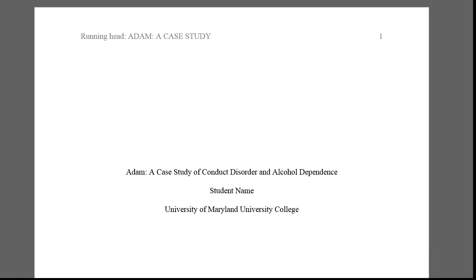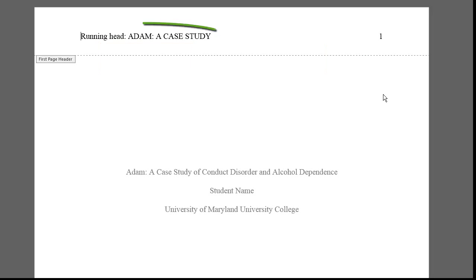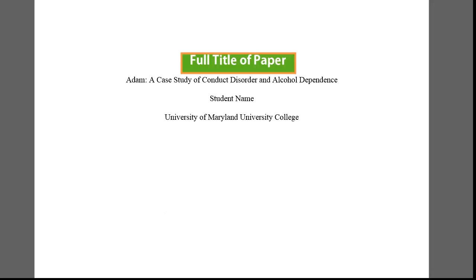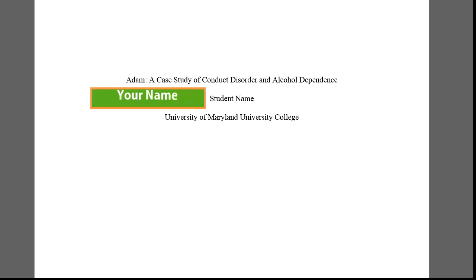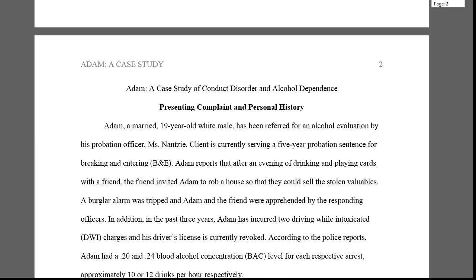Let's focus on some of the APA aspects of the case study analysis that your teacher expects. First is the Title Page. It has a running head and page number in the page header area. The running head on the title page is different than all the other pages, so please refer to the workshop thread on how to set up an APA document to learn to do this. In the approximate center of the page is the full title: Adam, A Case Study of Conduct Disorder and Alcohol Dependence. Then, double space, followed by your name, then another double space, followed by the name of your school. And that's all that belongs on the title page.